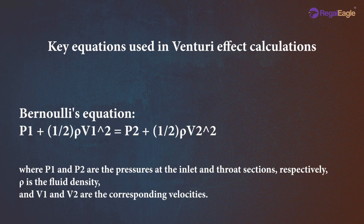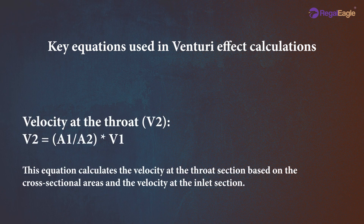The Bernoulli equation gives: P1 plus one-half rho V1 squared equals P2 plus one-half rho V2 squared, where P1 and P2 are the pressures at the inlet and throat sections respectively, rho is the fluid density, and V1 and V2 are the corresponding velocities. The velocity at the throat is given by V2 equals A1 divided by A2 multiplied by V1, which calculates the throat velocity based on the cross-sectional areas and inlet velocity.